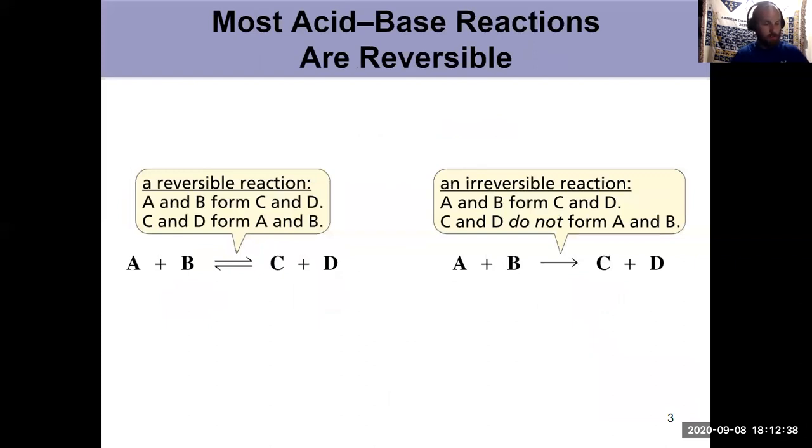The only thing that might be new from this first video is, in general chemistry, we talked about having seven strong acids, and those seven strong acids fully dissociate. That means they ditch their proton and don't come back. But in organic, really every reaction is reversible, including our strong acids and bases, depending on how we work with the solvent. So note those two arrow differences there.